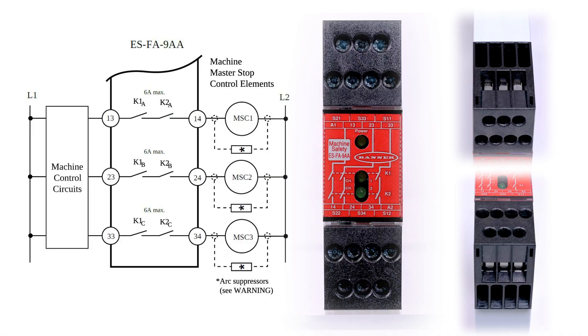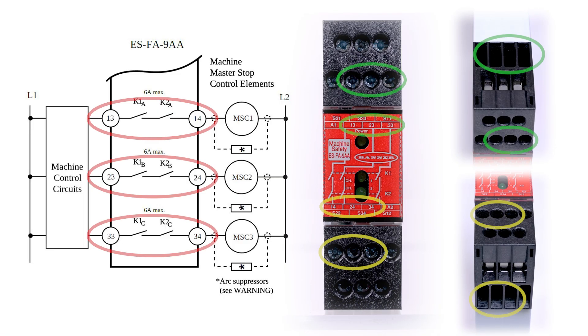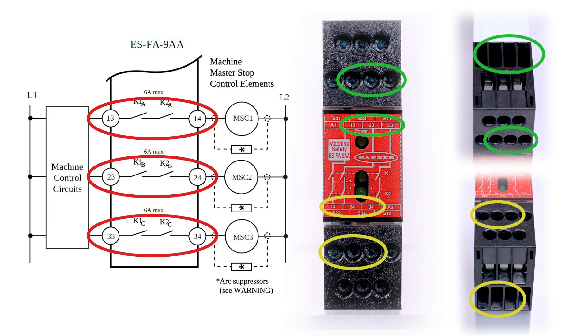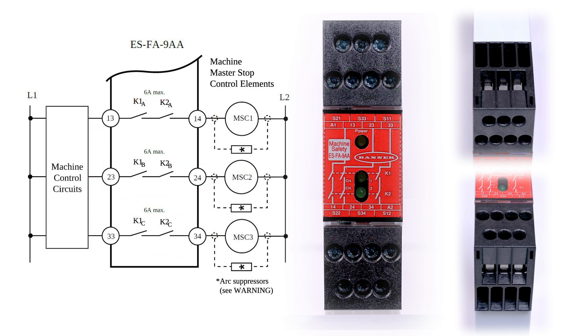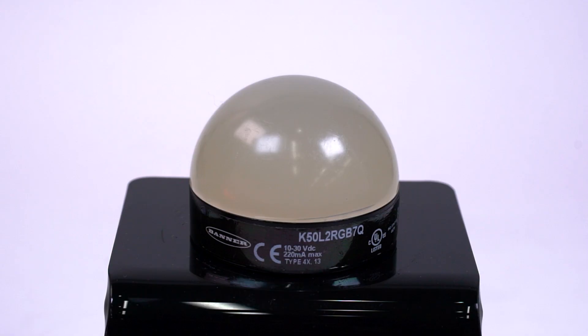The relay module's safety outputs are provided via terminals S13 and S14, S23 and S24, and S33 and S34. Connect the machine control circuits to the first terminal of each pair and connect your machine contactors to the second terminal of each pair. To simulate this, we are using a separate power supply and a K50 indicator.